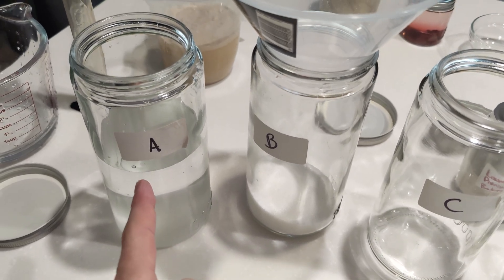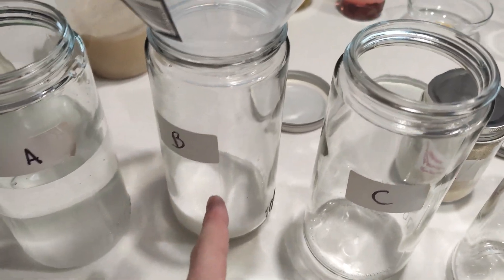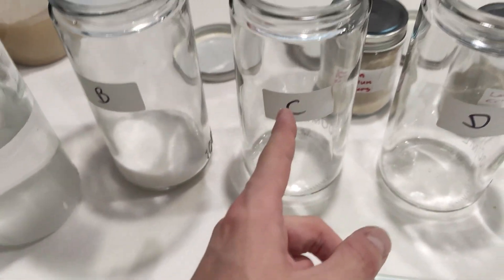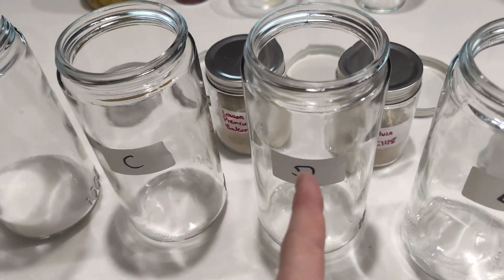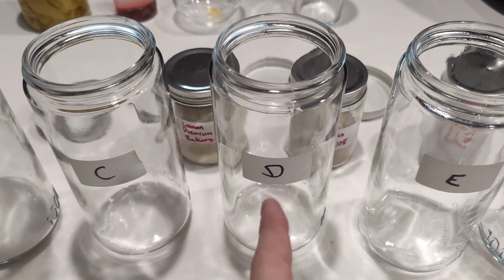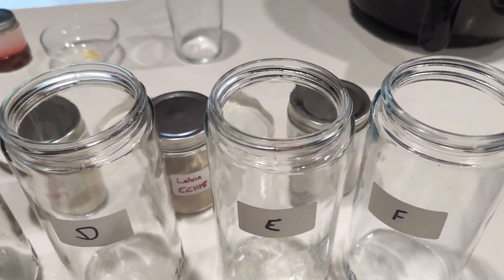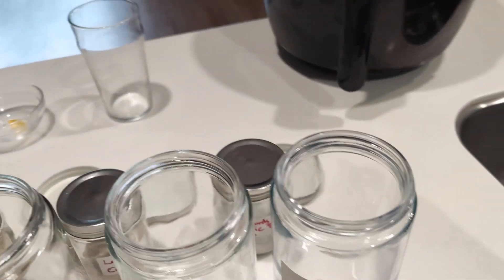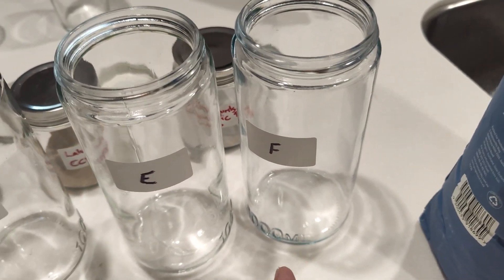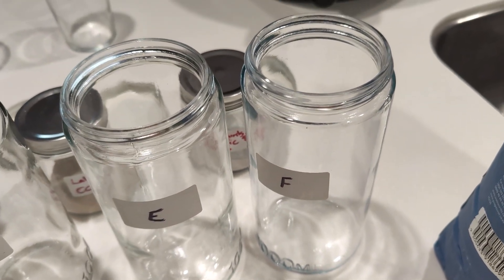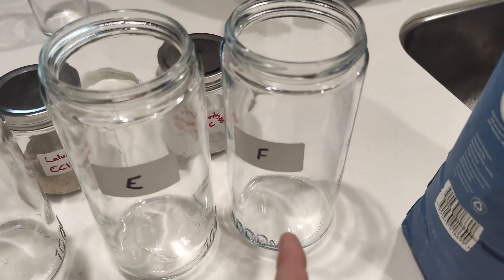So this will be 5 grams of turbo yeast. This will be 5 grams of baker's yeast. This will be 5 grams of EC1118. Then in D, I'm going to put 5 grams of baker's yeast and 1 gram of Fermate O. In E will be the same, the EC1118 and the Fermate O. And then F will be a bit of a combination. So I'm going to put in 3 grams of baker's yeast, 2 grams of EC1118 and 1 gram of Fermate O.